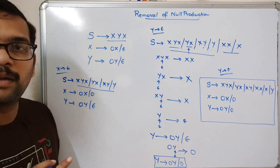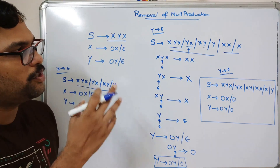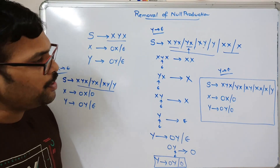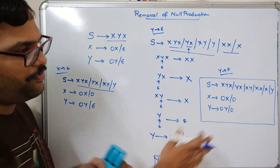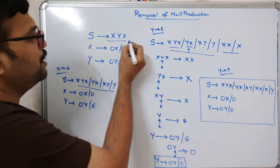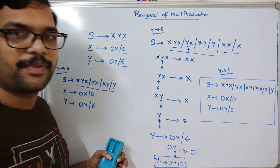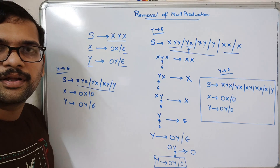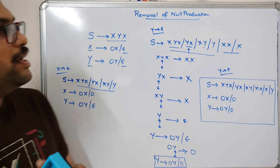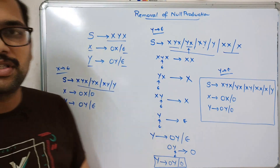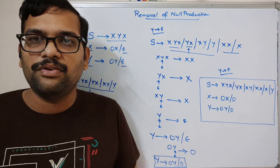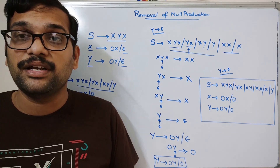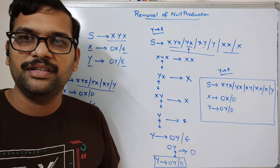So by replacing epsilon — that is, removing the null productions — we can simplify the context-free grammar. This is the final result after removing null productions x → ε and y → ε. Hope you understood this. If you have any doubts regarding how to remove null productions, feel free to post in the comment section. Like, share, and subscribe. Thanks for watching.